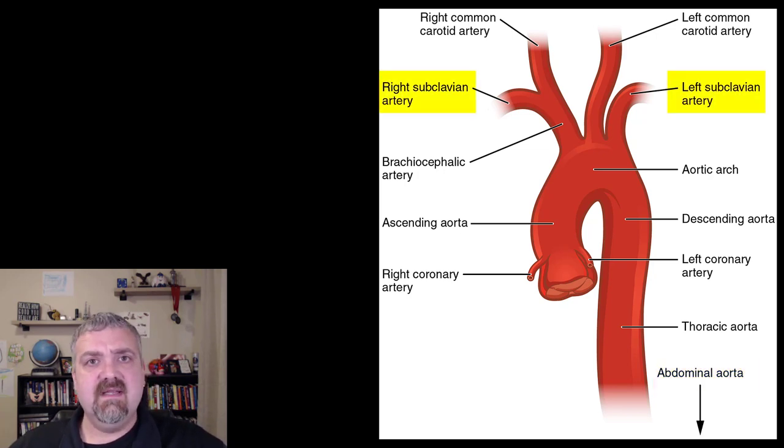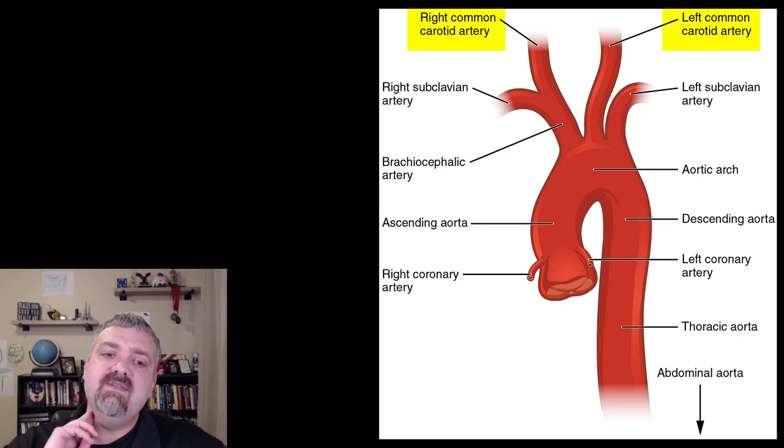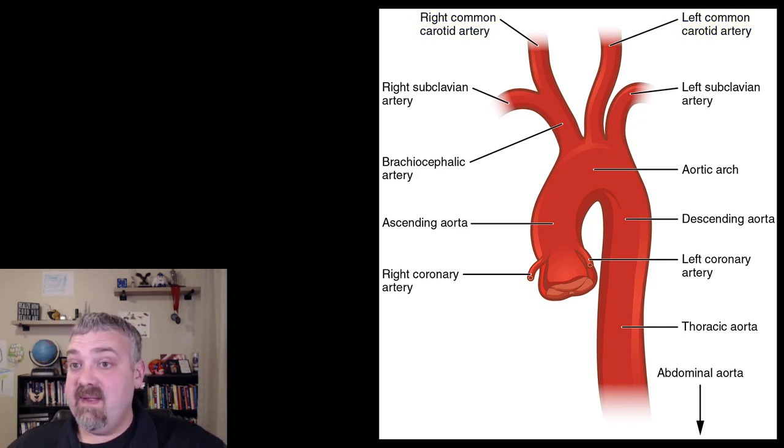Also here on this image, you see the right and left subclavian arteries. Clave means clavicle, so the subclavian arteries are going to be right here underneath your clavicles. You also have the right and left common carotid artery. Your carotid artery is the one you take your pulse with there in your neck. Also remember, notice that the left common carotid artery is on the right side of the image. We're talking about our patient's lefts and rights, not the picture we're looking at.